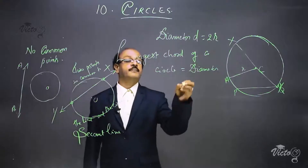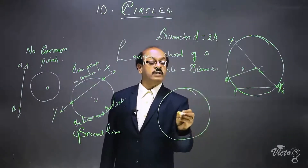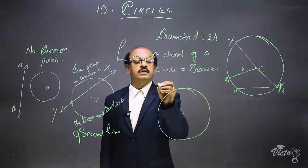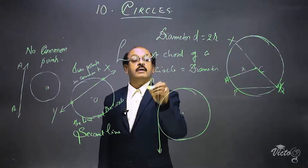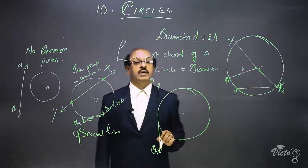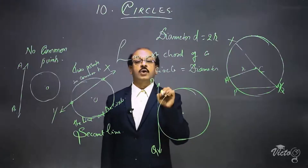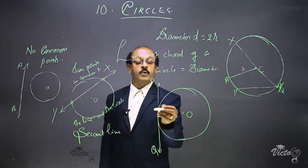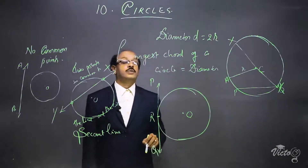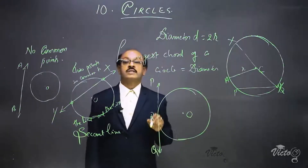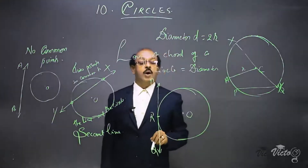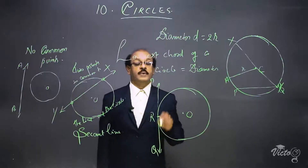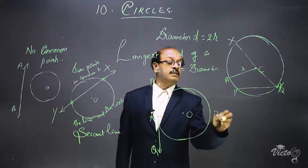Here is a circle with center O and a line just touching the circle at one point. Naming the line as PQ — the line PQ is just touching the circle, meaning there is only one point in common to line PQ and the circle with center O. The common point is R. In such a case, the line PQ is called a tangent line to the circle.